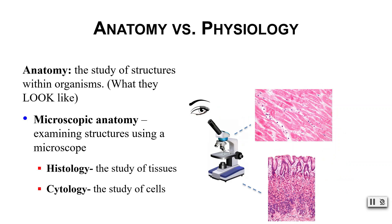We can also study smaller structures using microscopes; we refer to this as microscopic anatomy. We can further subdivide microscopic anatomy into histology, which is the study of tissues, and cytology, which is the study of cells.